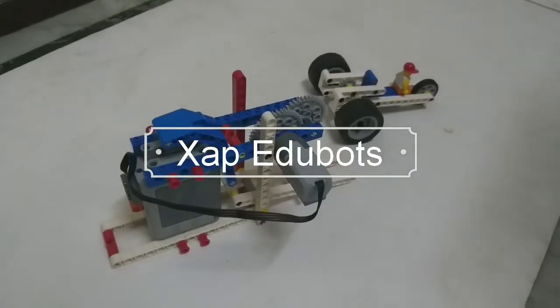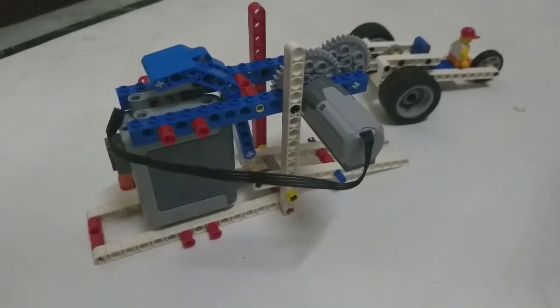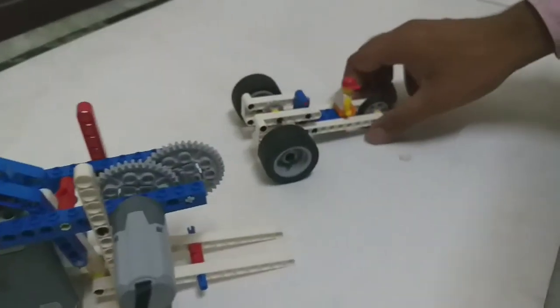So friends, today we will learn about the car launcher. As you can see in front of you, there are two parts lying: number one is the launcher and the other one is the car.